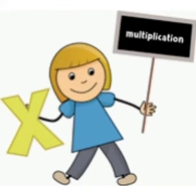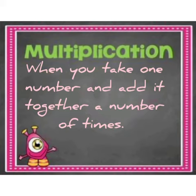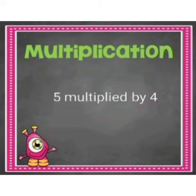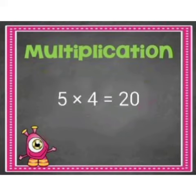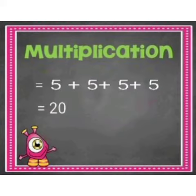What is multiplication? Multiplication is when you take one number and add it together a number of times. For example, 5 multiplied by 4 is equal to 5 plus 5 plus 5 plus 5, which equals 20. We took the number 5 and added it together 4 times. This is why multiplication is sometimes called times.